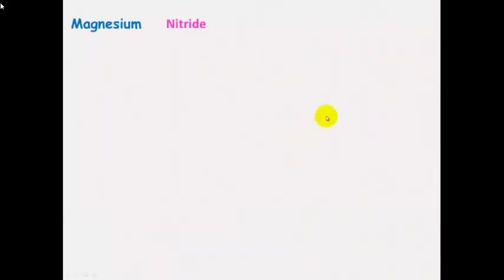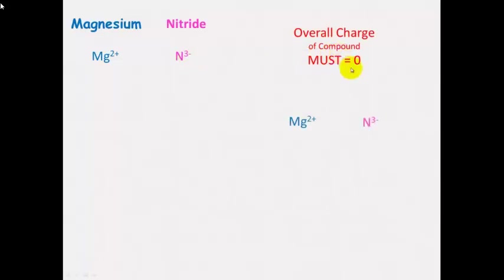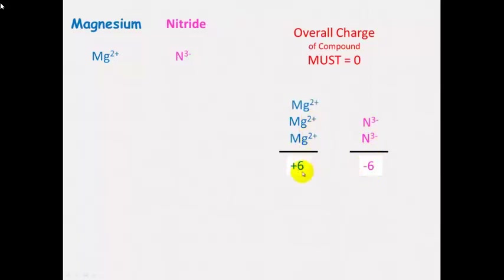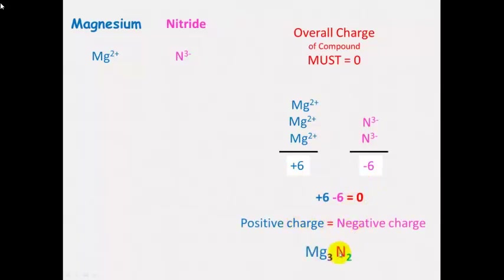For magnesium nitride: Mg²⁺ and N³⁻. The overall charge must be 0. We have a plus 2 and a minus 3, so we need 2 nitride ions to make a negative 6 charge, and 3 magnesium ions to make a positive 6 charge — positive charge equals negative charge. So the formula is Mg₃N₂: 3 magnesiums and 2 nitride.